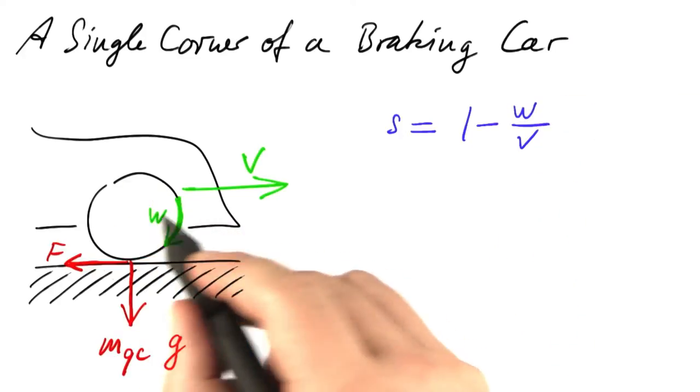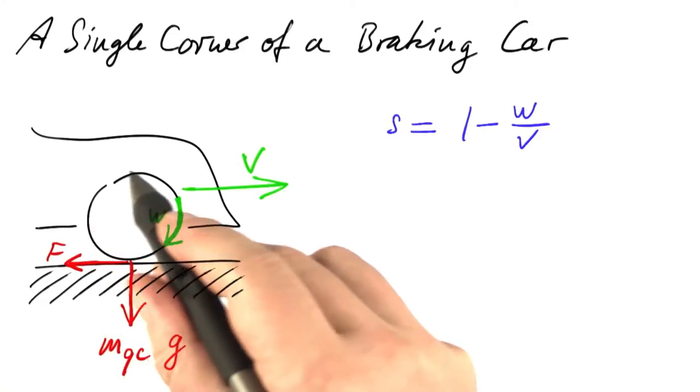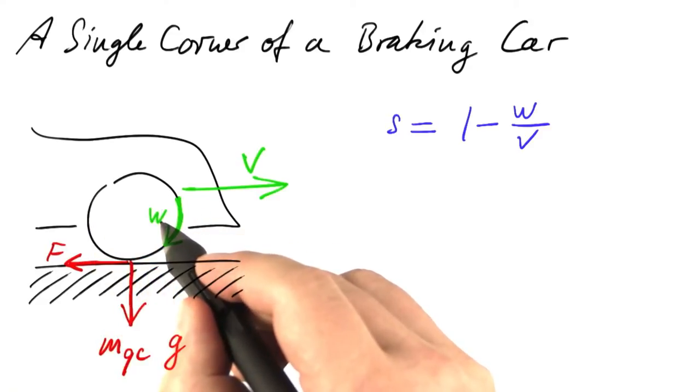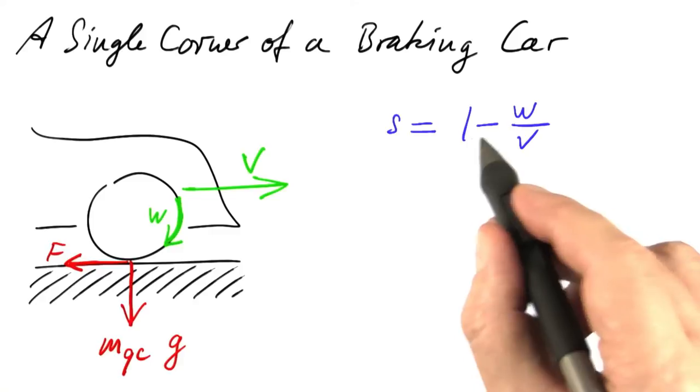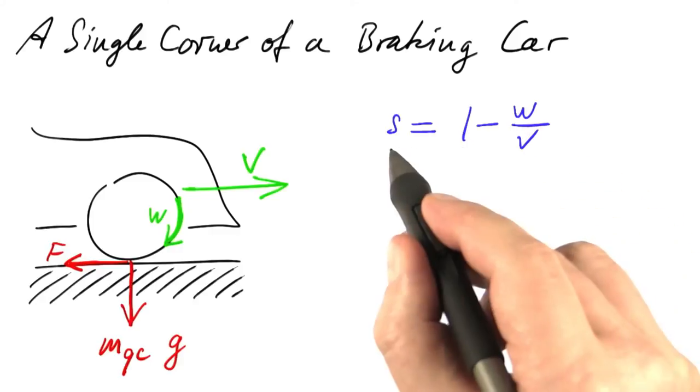Let's do a sanity check. If the wheel is locked, the velocity of its rim will be 0, and W will become 0. And what do we get? 1 minus 0, a value of 1, fitting to the wheel being locked.